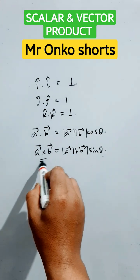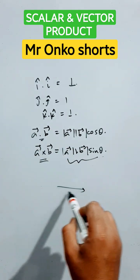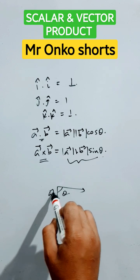Vector product gives a vector result but the scalar product gives a scalar result. Here the two vectors made angle theta between them, that is A and B.